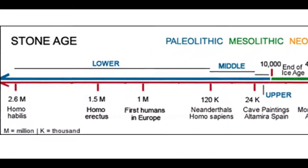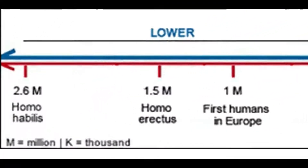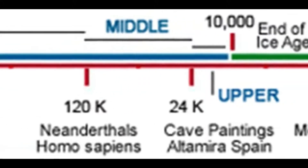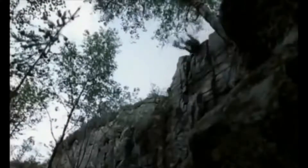The Paleolithic Age is divided into three periods: the Lower Paleolithic, Middle Paleolithic, and Upper Paleolithic. In this video, we are going to tackle the Middle and the Upper Paleolithic period, together with the development of technology and culture in these times.